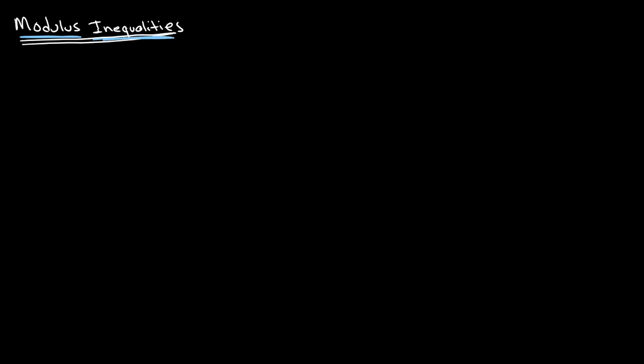Let's say that we have the absolute value of x is less than or equal to 5 and we have to simplify this. If you remember what absolute values are, it's essentially the magnitude of x, and it's very easy to represent this on a number line.